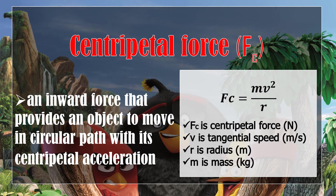Lastly, we have centripetal force — an inward force that causes an object to move in a circular path with centripetal acceleration. The formula is: centripetal force equals m v squared over r, where centripetal force is measured in newtons, tangential speed in meters per second, r is the radius in meters, and m is mass in kilograms.